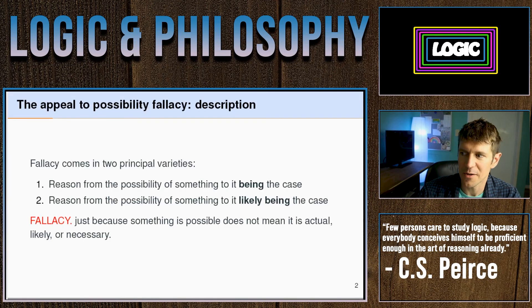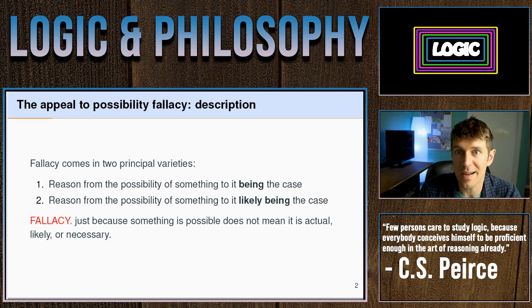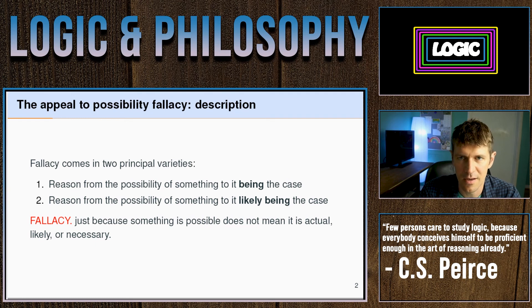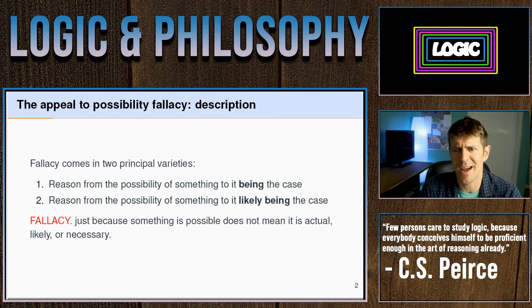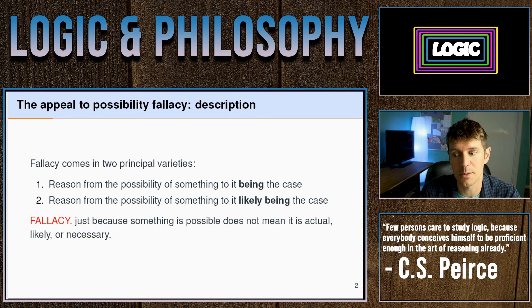What's the fallacy? The fallacy comes in two principal varieties. The first variety reasons from something being possibly the case — that it might occur, that it's logically possible — to it actually being the case. The second variety is reasoning from something being possibly the case to it being likely to be the case, meaning there's a good chance it will occur. This is a fallacy because just because something is possible doesn't mean it's actual, likely, or necessarily the case. Possibility doesn't imply actuality, likelihood, or necessity.